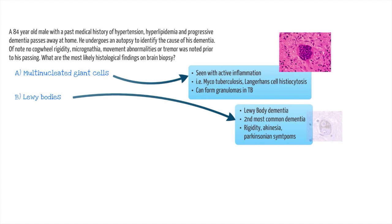Choice B is Lewy bodies. Lewy bodies are associated with a type of dementia called Lewy body dementia, which is the second most common cause of dementia after Alzheimer's disease. Lewy body dementia is associated with fluctuations in cognition, visual hallucinations, and Parkinsonian symptoms, including limb rigidity, gait disturbances, and difficulty initiating movements, otherwise known as akinesia. In this picture, we have a depiction of a Lewy body seen as a small sphere in the cytoplasm of the cell surrounded by brown pigmented material. Given our patient has no Parkinson's symptoms, Lewy body dementia is unlikely, and we would not expect Lewy bodies on histology.